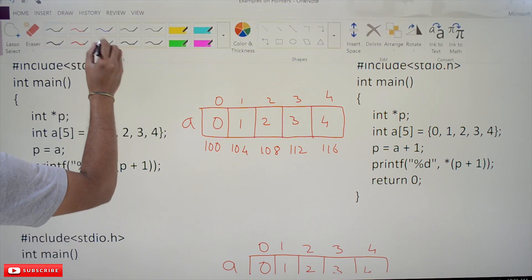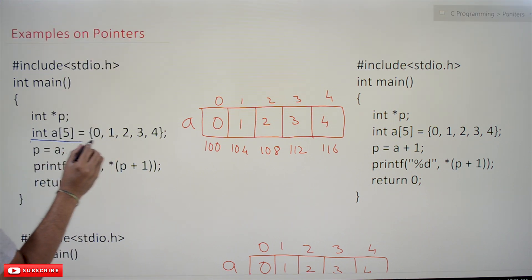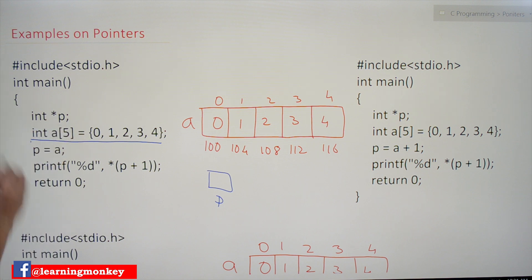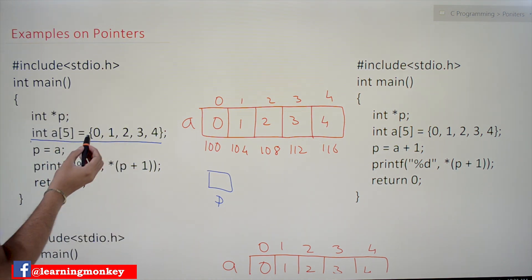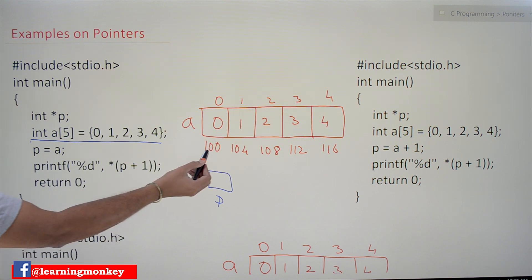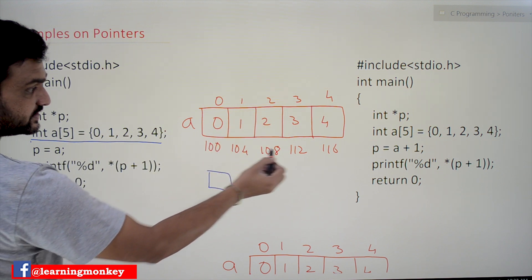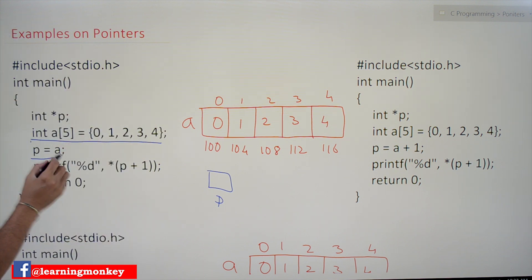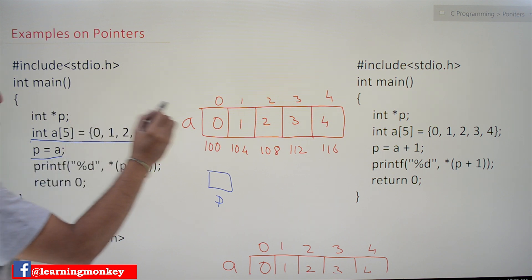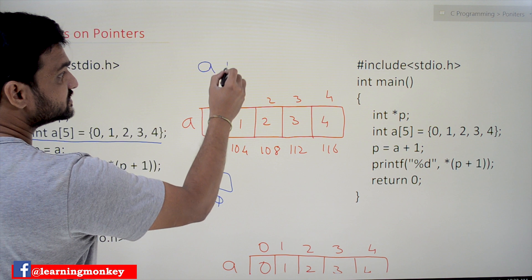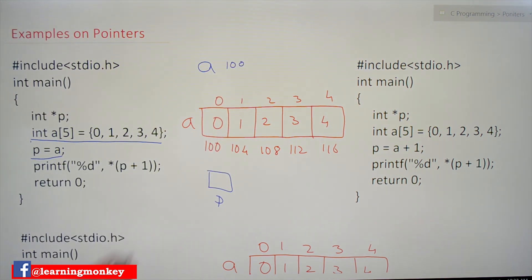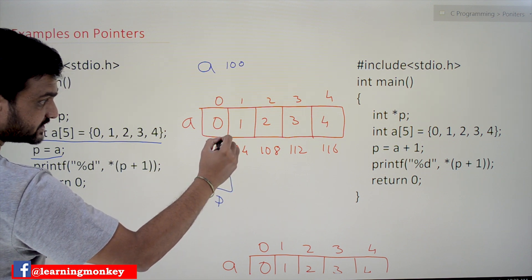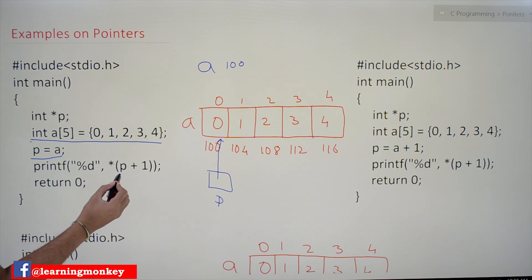This first line of code: we have declared a pointer P, but it has not been initialized. An array has been created — the starting address is 100, and integer is occupying four bytes of space. Now, P = a means the address of a, which is 100. So that address gets assigned to P, meaning P is now pointing to location 100.